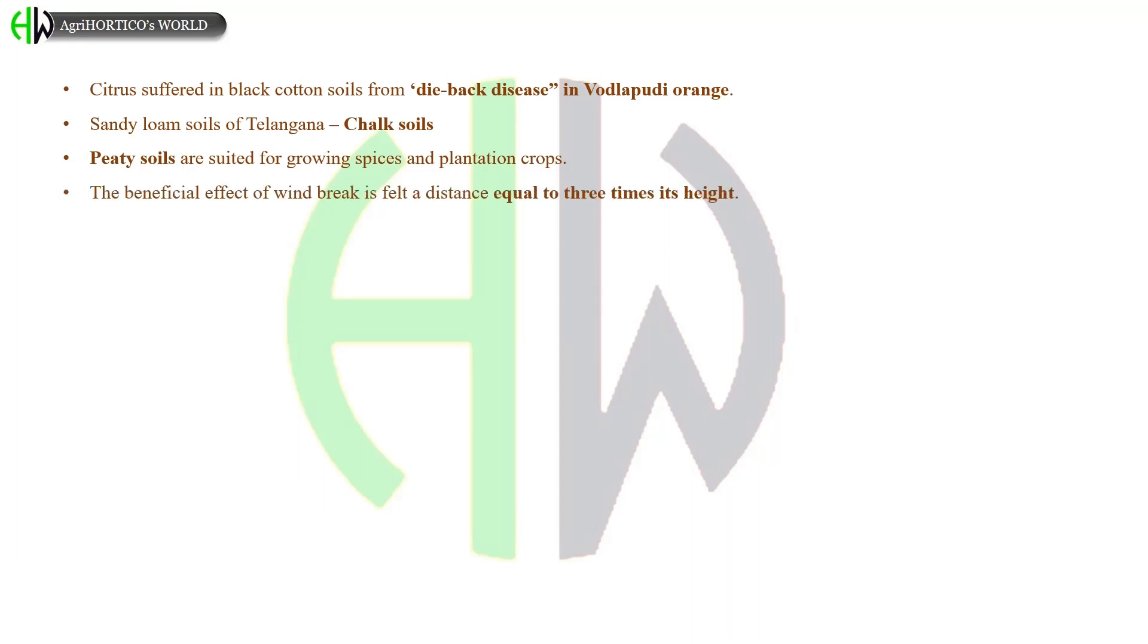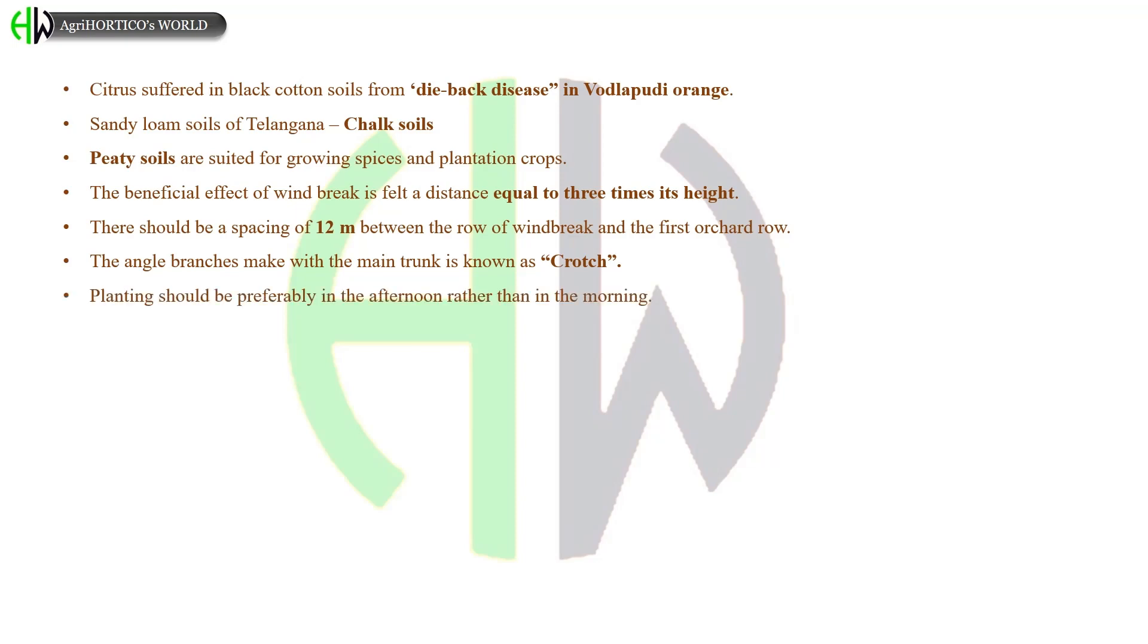The beneficial effect of windbreak is seen when the distance is equal to three times of its height. There should be a spacing of 12 meters between the row of windbreak and the first row of orchard. The angle between the branches and main trunk is known as crotch or crotch angle. Planting should be preferably done in the afternoon rather than in the mornings.